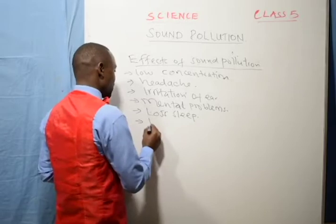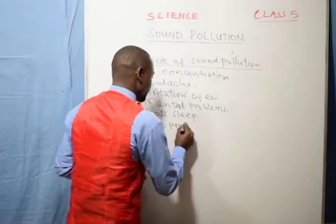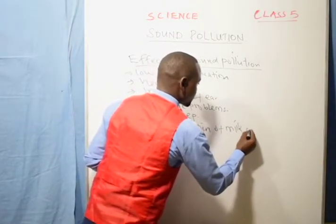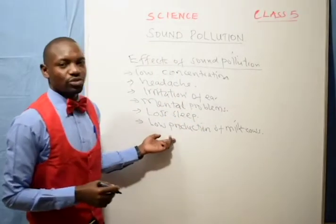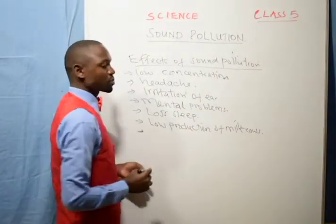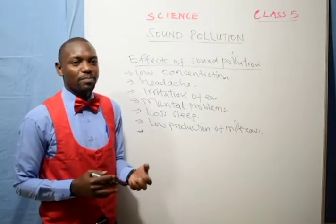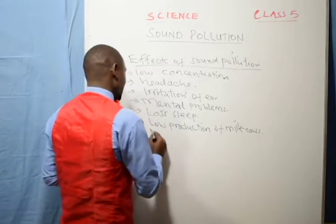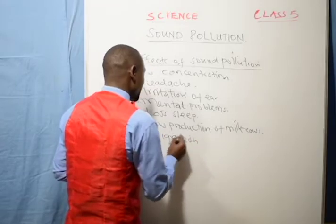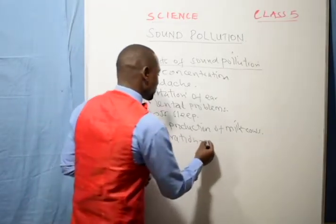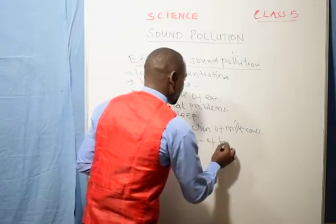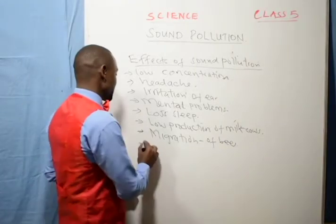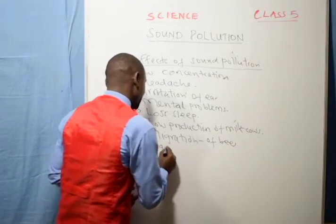Sound can cause lack of or low production. Low production of milk in cows. Sound can also lead to low production of milk in cows. Those people who keep bees at home in the beehives, in that area there is a lot of noise, those bees will migrate. Migration of bees because they need areas of silence. It will also affect laying of eggs in chicken.